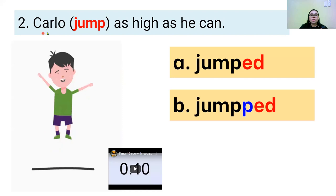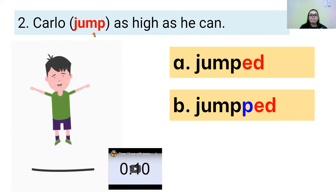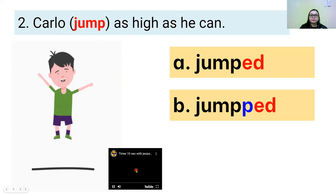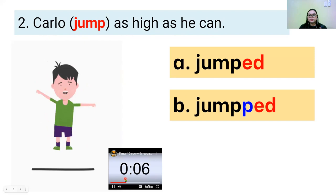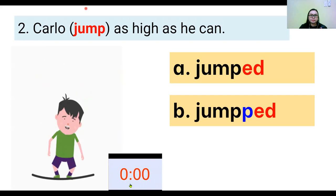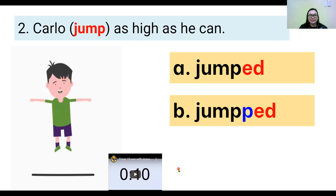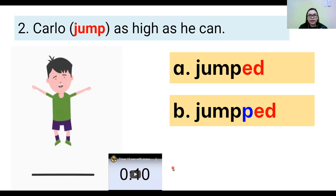Let's go to the next one. Carlo jumped as high as he can. Can you read the sentence, please? Go. Very good. A or B? Can you show your answer to the person beside you if you have someone there? If not, I hope you answered correctly. The correct answer is A.